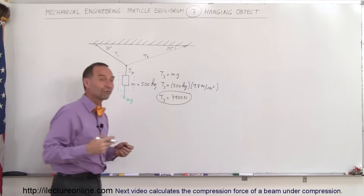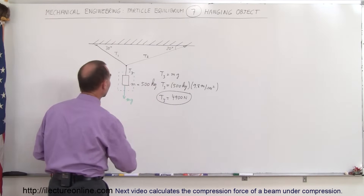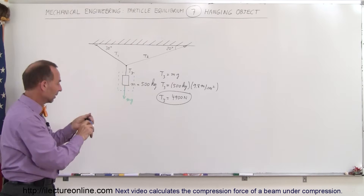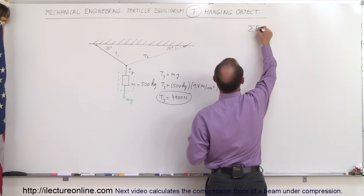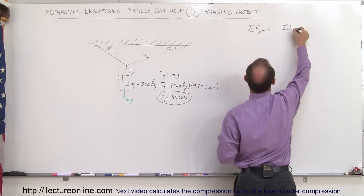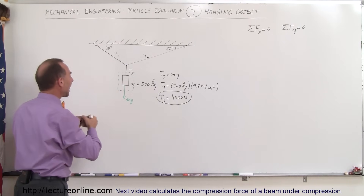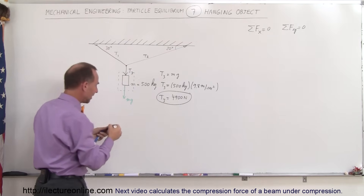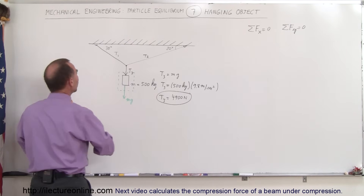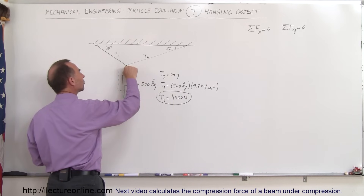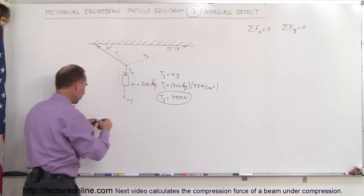Finding tension one and tension two is more challenging. We need to find the two components of each force because everything is in equilibrium. The sum of forces in the x direction must equal zero and the sum of forces in the y direction must equal zero. Tension three acts downward at 4900 newtons in the negative direction, while T1 and T2 act at angles from the connection point.